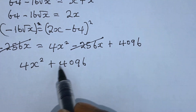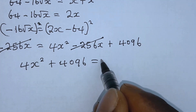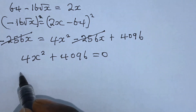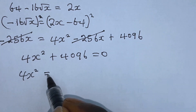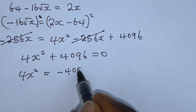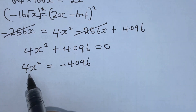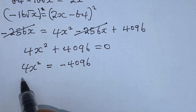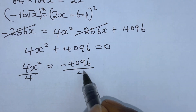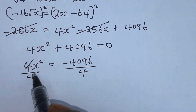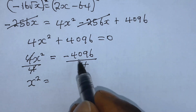From here we can set everything equal to 0. So 4x squared is equal to minus 4096. We divide both sides by 4 so that we can get our value of x. This 4 gets cancelled with this 4, and we are left with x squared equals minus 1024.